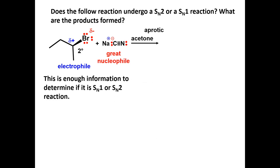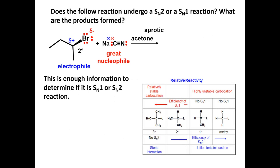This is enough information to determine if it is an SN1 or SN2 reaction. The solvent is aprotic which does not promote an SN1 reaction. The alkyl halide is secondary and will undergo an SN2 reaction. The cyanide ion is a great nucleophile. This is an SN2 reaction.